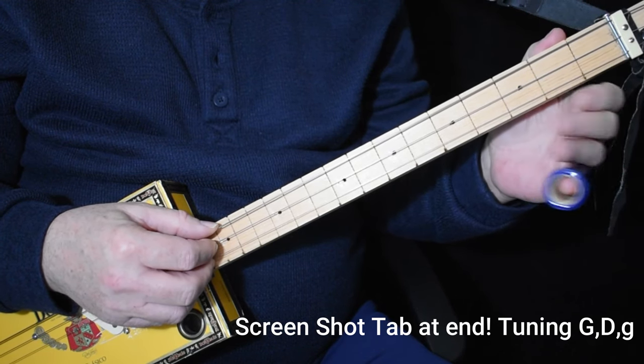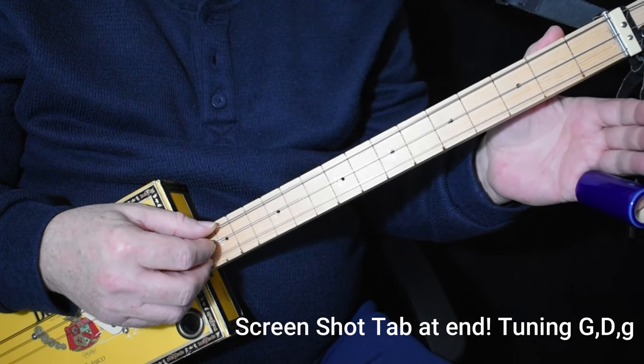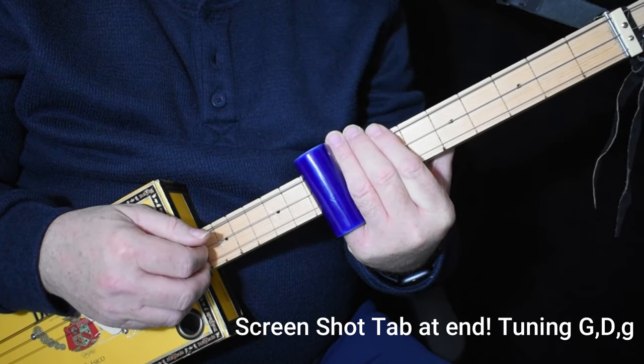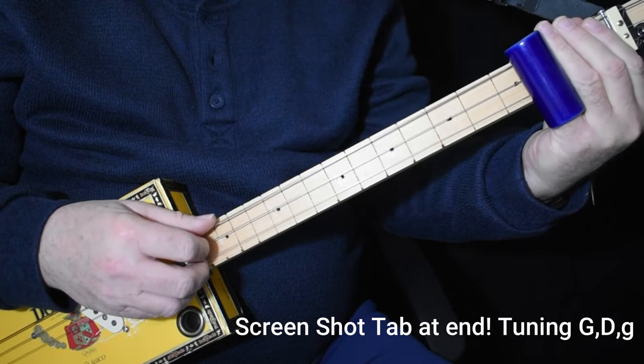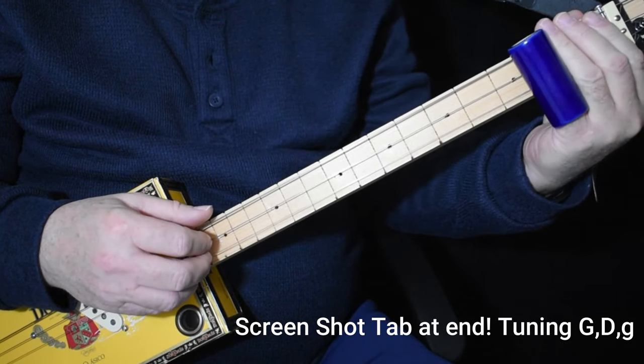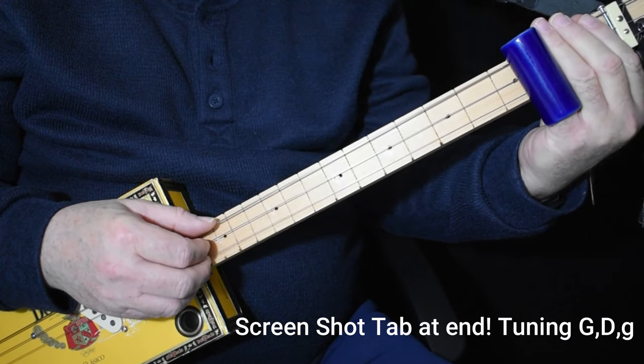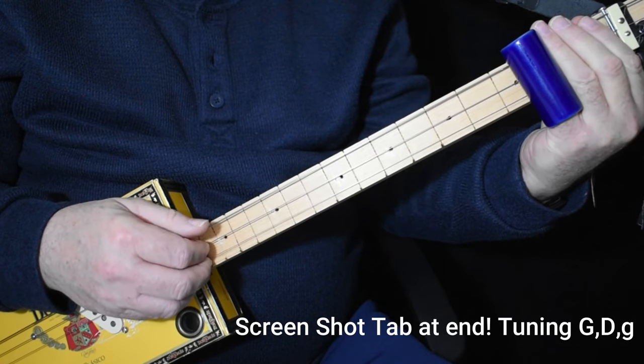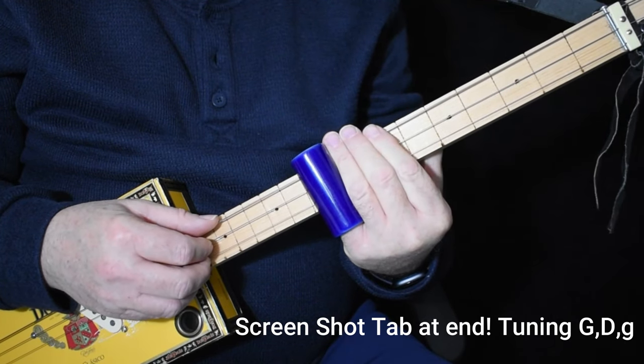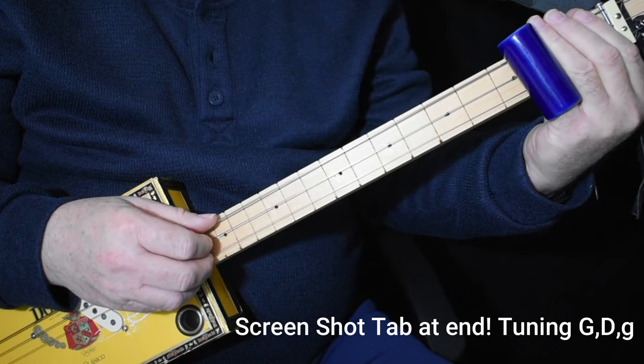Now the one thing that is different about this song is when the singing starts, you don't do that lick anymore. You just fill in. And of course you wouldn't fill in with opens. You'd fill in with 9s. Like that. And you would go right to the 4 chord on the 2nd fret. And back to the 1, which would be the 9.